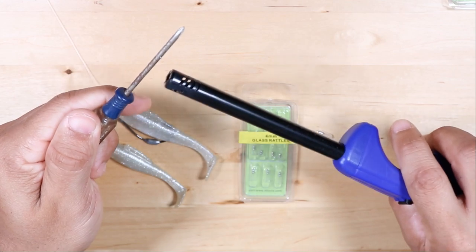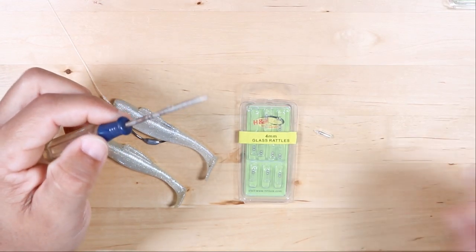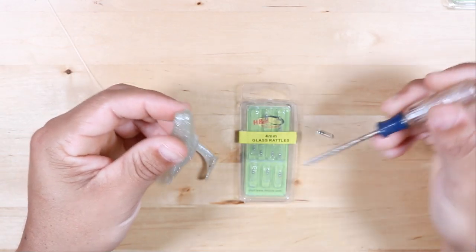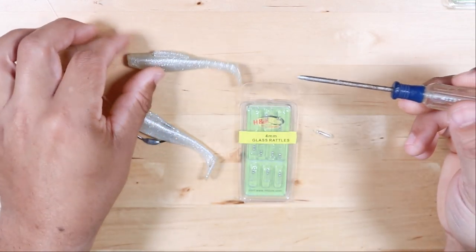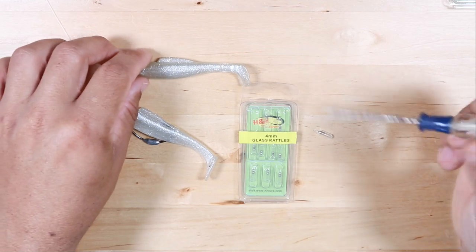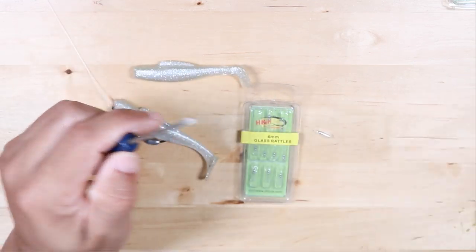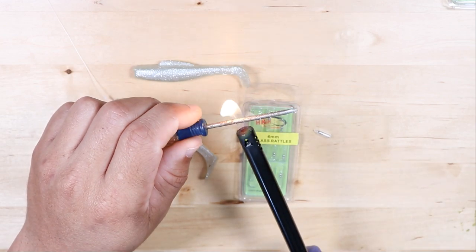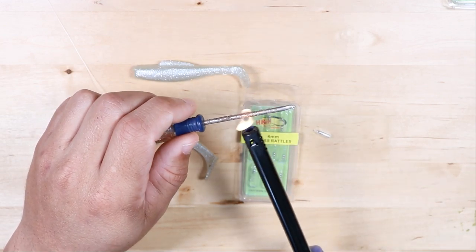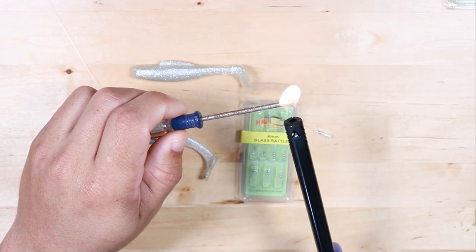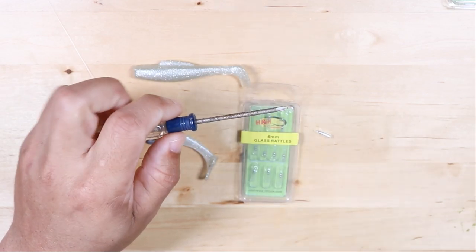Along with the screwdriver, you're going to need a lighter to heat it up with, because that heat will actually help penetrate the bait better and you can create a pilot hole for that rattle to go into. Just to demonstrate here, again make sure you know where you want to put the rattle on the bait, have that planned out so the hook's not in the way. You can just heat up your screwdriver with the lighter. Once it starts smoking, it's pretty much good to go.